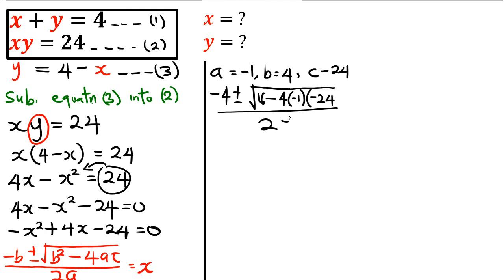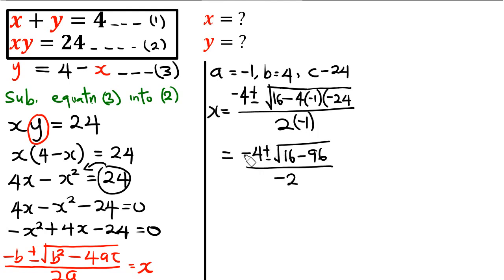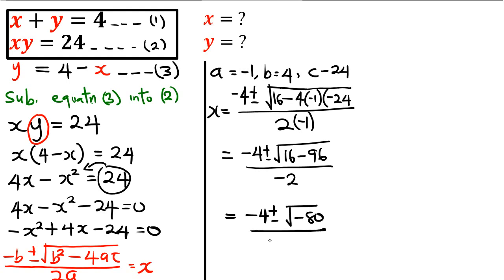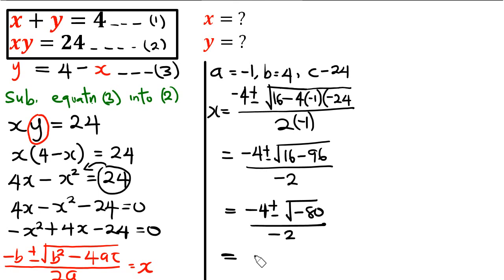Since a equals minus 1, the denominator becomes 2 times minus 1, which is minus 2. We then have minus 4 plus or minus the square root of minus 80, all over minus 2. The minus in the denominator moves up to give us: minus times the quantity (minus 4 plus or minus the square root of minus 80), all over 2.